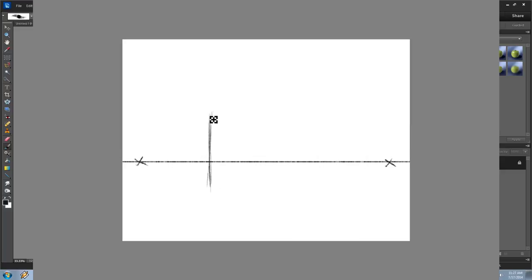Two point perspective adds an additional vanishing point to make a more believable depth. Two point, for this reason, is one of the most commonly used perspective choices for artists.